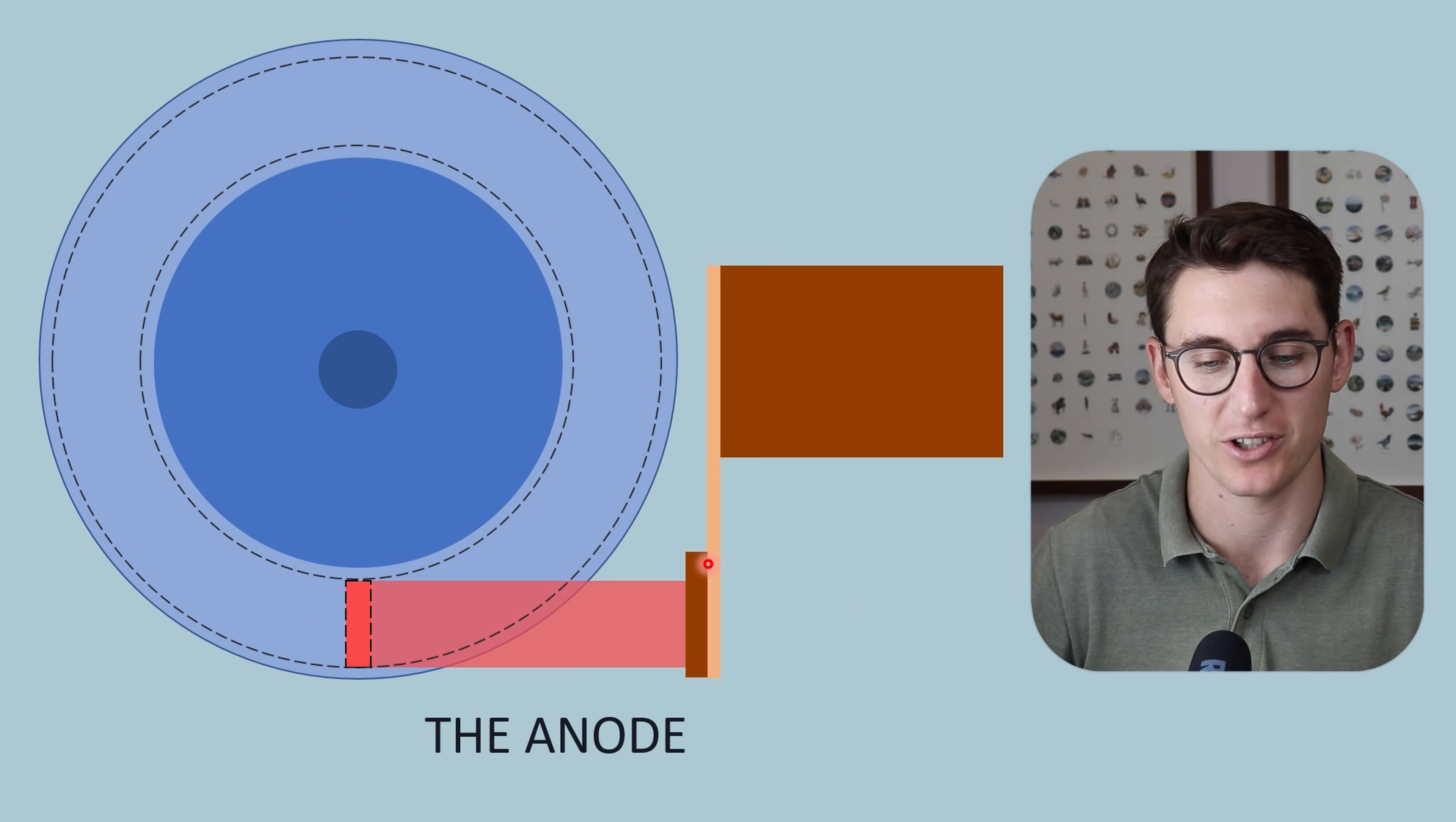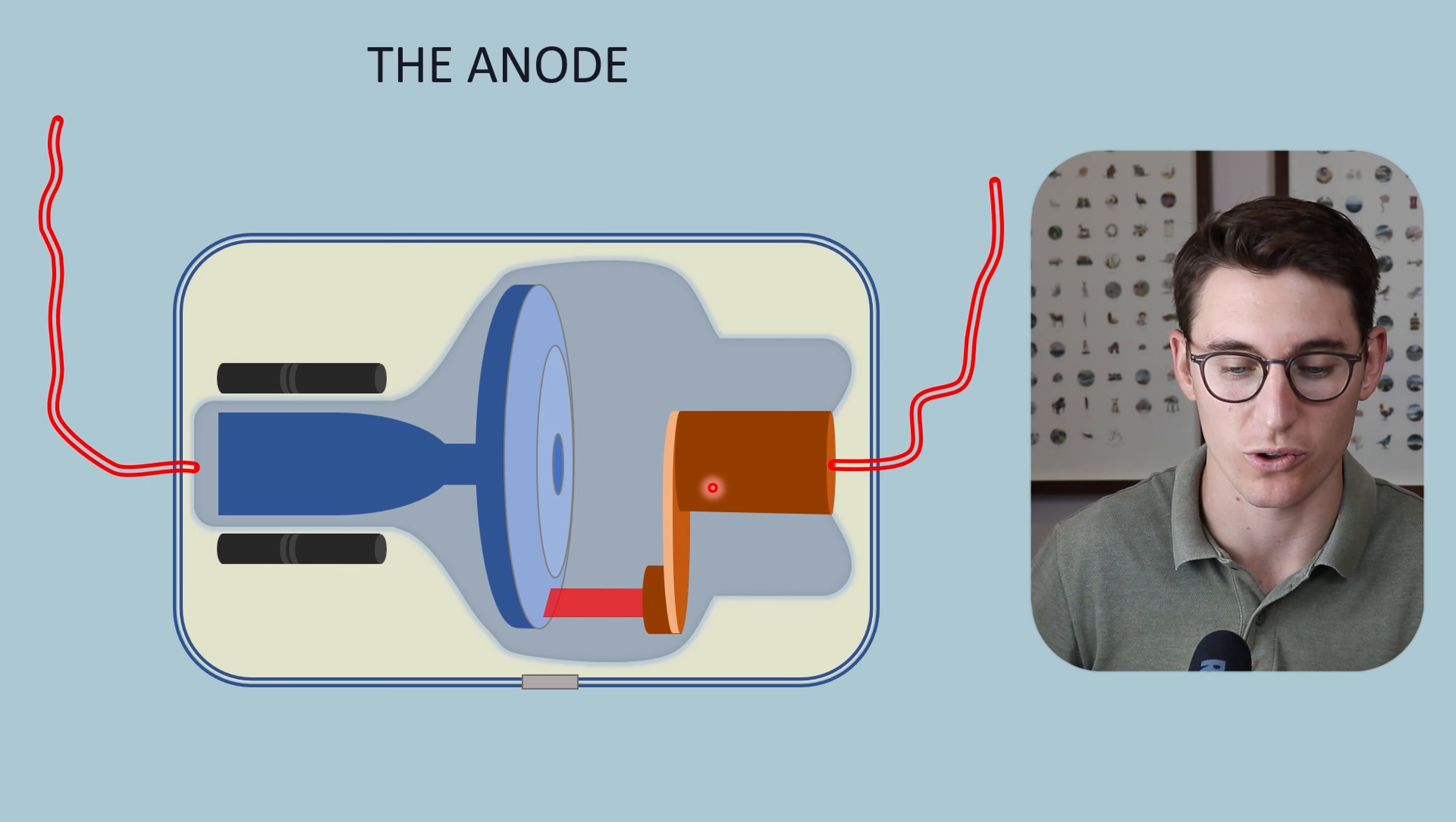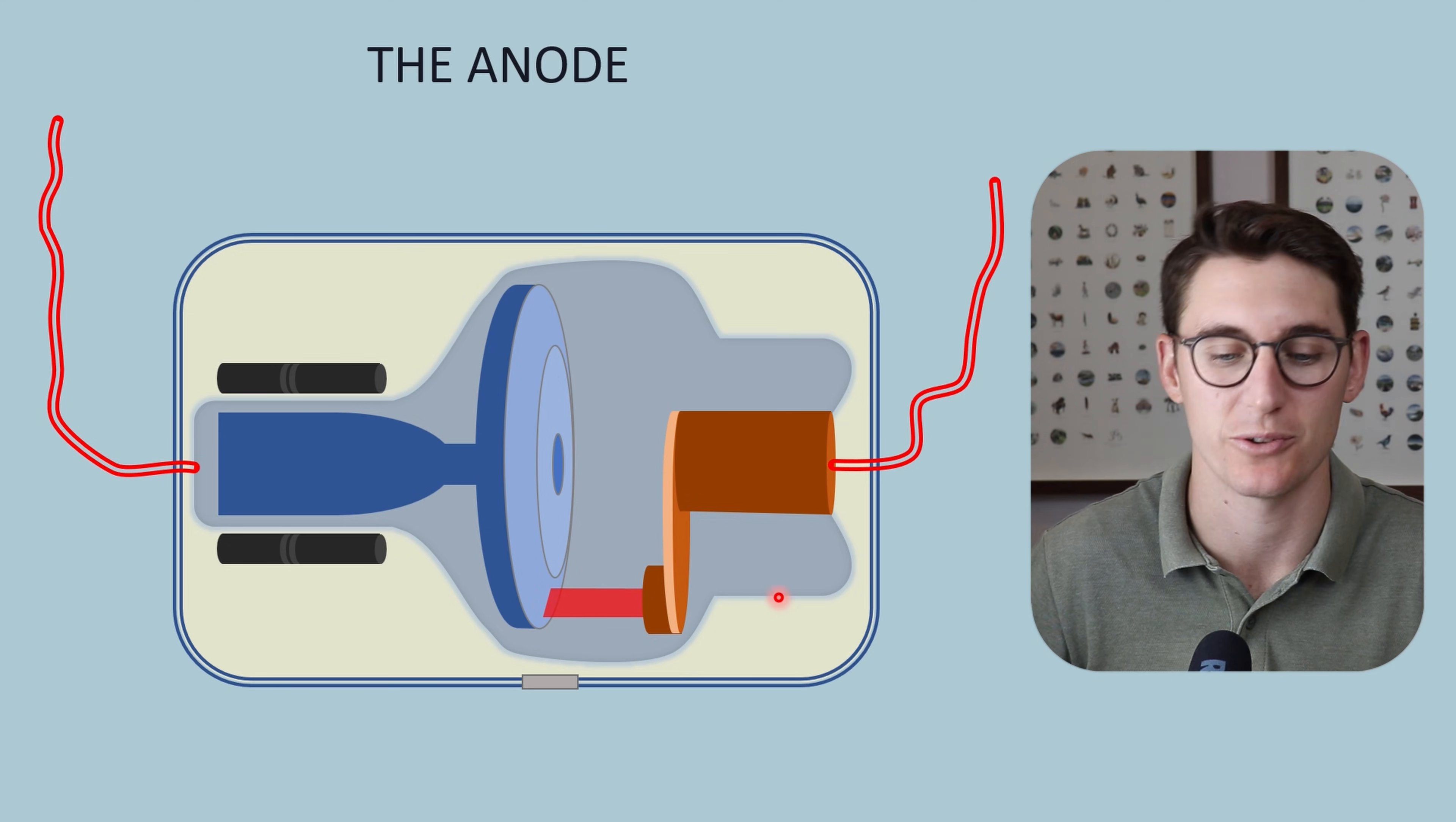We're actually looking at the anode head on here. If we look at how these fit within our x-ray tube: here is our cathode, our electron stream, accelerated electrons due to a voltage potential between cathode and anode, and we see those electrons striking our anode. This point where they strike is known as the actual focal spot on the anode.